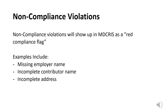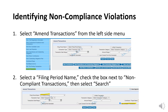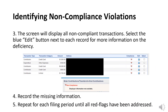A non-compliance violation will show up in MDCRIS as a red compliance flag. There are many reasons a non-compliance flag can be triggered, including missing employer name, incomplete contributor name, or incomplete address. To identify potential non-compliance issues, select Amend Transactions from the left side menu, then select the report name and select the box for Non-Compliant Transactions. Once search has been executed, a list of any non-compliance flags will appear. The committee can click on the edit icon to see more information about what is missing to bring that record into compliance. Once the edit has been made, save the record and proceed to the next non-compliance flag.